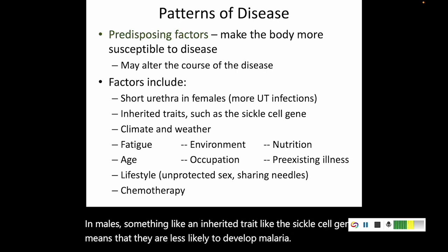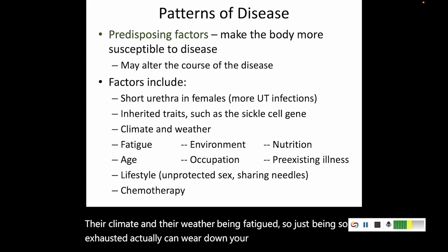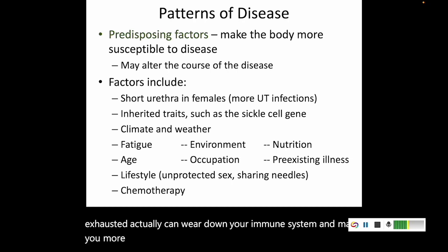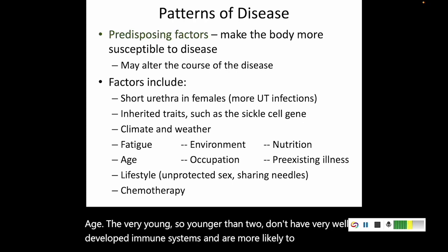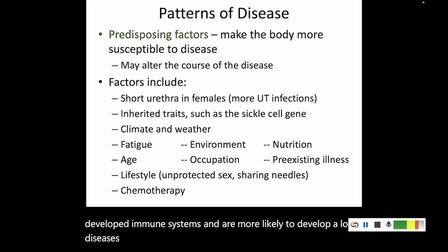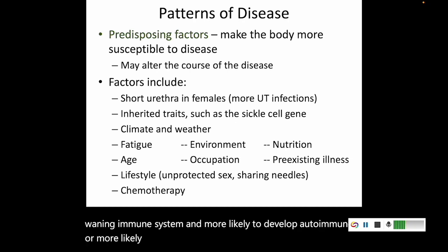Climate and weather, being fatigued — just being so exhausted can wear down your immune system and make you more likely to get a lot of diseases. Age is also a factor: younger than about two, children don't have very well-developed immune systems and are more likely to develop many diseases. Also the elderly, older than about 65, start to have a waning immune system and are more likely to develop infectious disease.